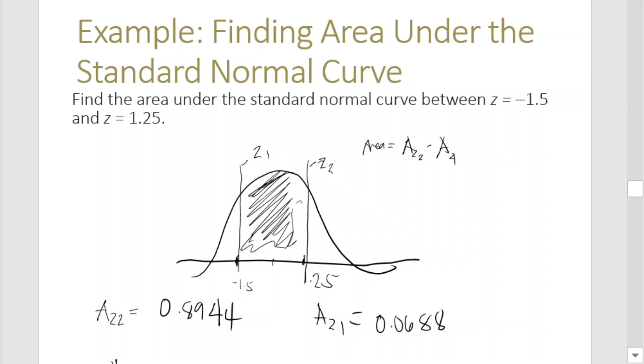So as stated, to get the area in between, you need to subtract: 0.8944 minus 0.0668, which equals 0.8256. Or you can interpret this area as representing 82.56% of the chart.